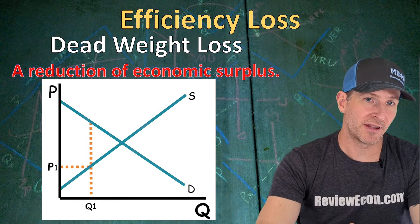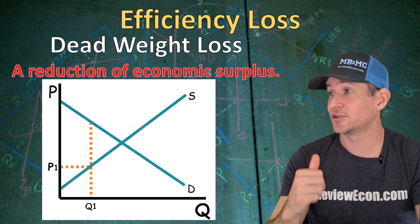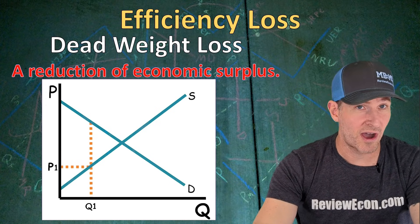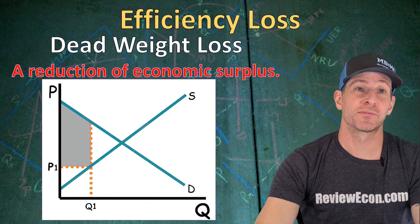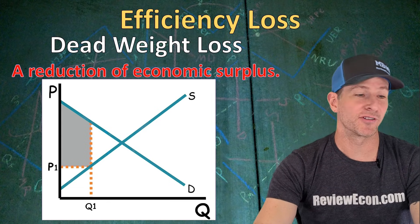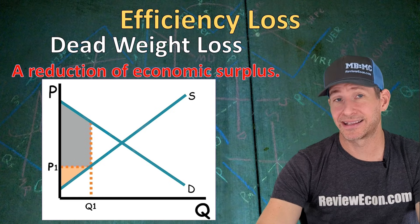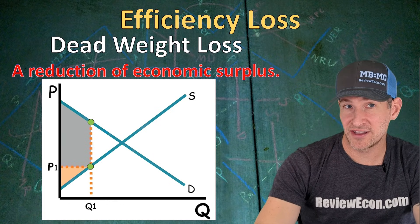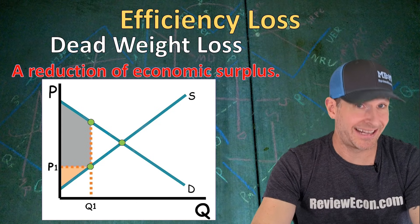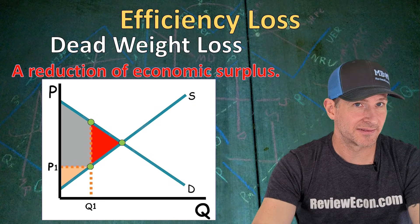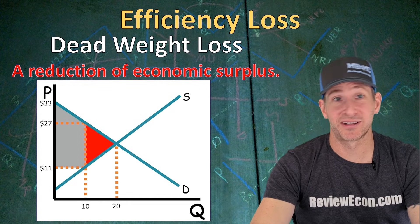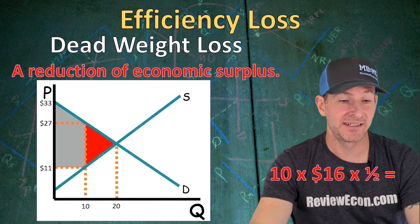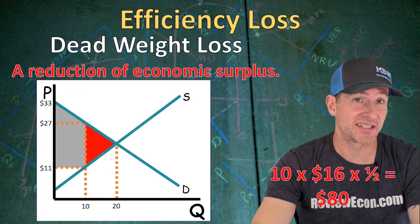If the price is below equilibrium, the quantity supplied is less than the quantity demanded and we have a shortage, but Q1 is all we get because consumers can't buy more than producers are willing to produce. The consumer surplus runs from that low price up to the demand curve at Q1, and producer surplus drops down to the supply curve from P1. Since we haven't reached equilibrium, we again have deadweight loss — found using the same three points. With numbers, the deadweight loss has a base of 10 and a height of $16 ($27 minus $11) times one-half, giving $80 of efficiency loss. Consumer surplus here is calculated as a trapezoid: heights of $22 and $16 added together, divided by two, times the base of 10 units, equals $190 of consumer surplus.